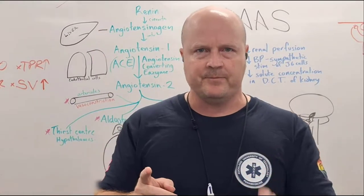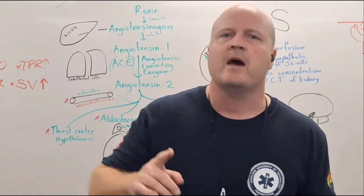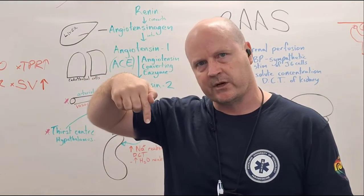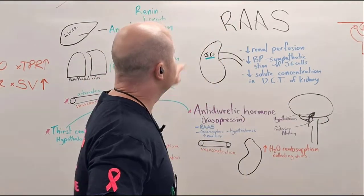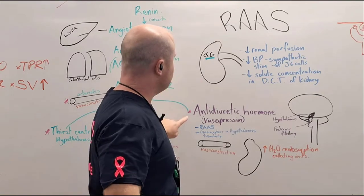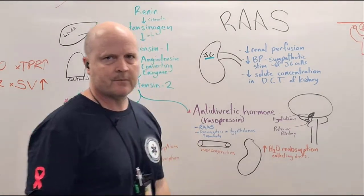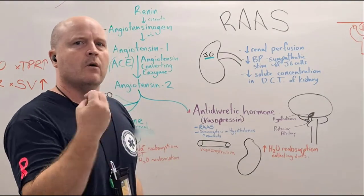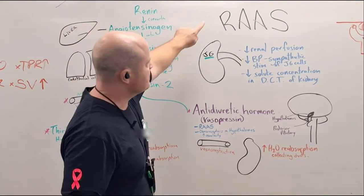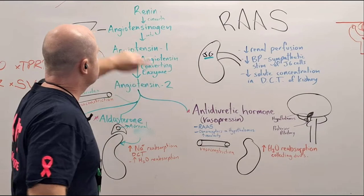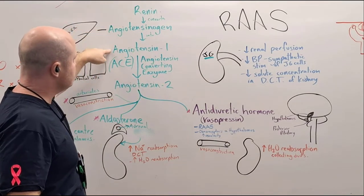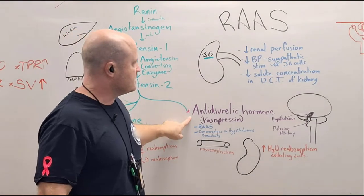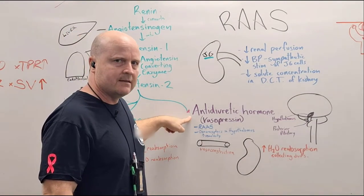Kia ora team, my name's Ben. We've talked about the sympathetic nervous system response to decreasing blood pressure. Now let's talk about RAS and anti-diuretic hormone. Our problem is our blood pressure is dropping — what is our body going to do? One system is called RAS, which stands for renin-angiotensin-aldosterone system, and the other is the release of anti-diuretic hormone.